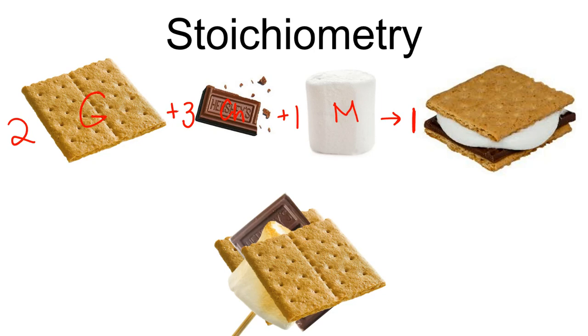the recipe or the reaction would be 2G plus 3 chocolate plus one marshmallow makes one s'more, which we could call a G2CH3M.